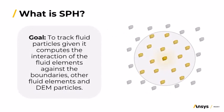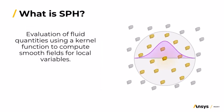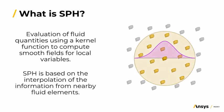The goal of the SPH method is to track fluid particles, given it computes the interaction of the fluid elements against the boundaries, other fluid elements, and DEM particles. The fluid quantities are evaluated using a kernel function that interpolates the information from nearby fluid elements to provide a smooth field for local variables. The information of a single SPH element has no meaning — you need to interpolate the information from nearby fluid elements to extract the information needed.